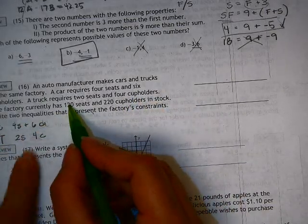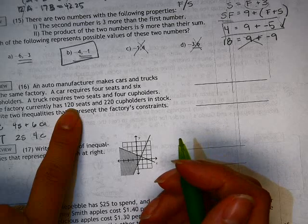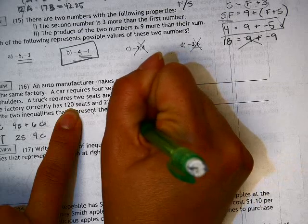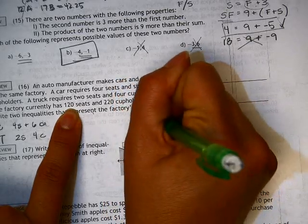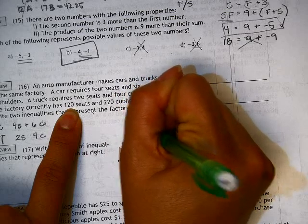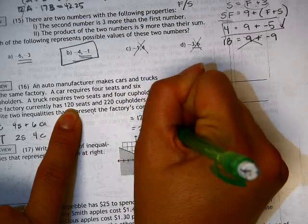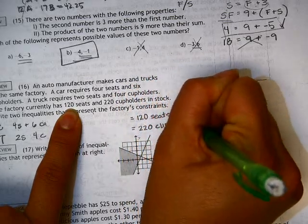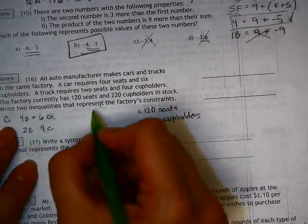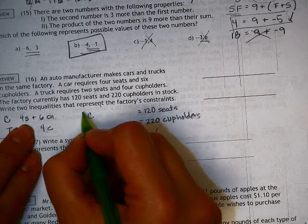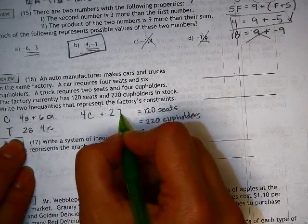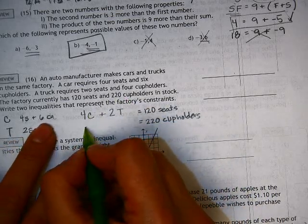The factory currently has 120 seats and 220 cup holders. So we have 120 seats we need a situation for, and we need a situation for 220 cup holders. So what we have really here is that a car is 4 seats, and a truck is 2 seats.